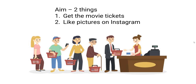Imagine it's the 90s and you can't book online — you're waiting in line for movie tickets. Our aim is to do two tasks: the first task is to get the movie tickets, and the second task is to like pictures on Instagram. You can do them in any order, and that order depends on whether you're doing it synchronously or asynchronously.